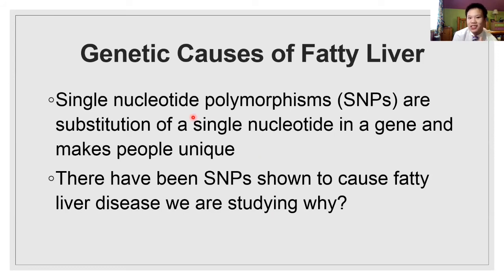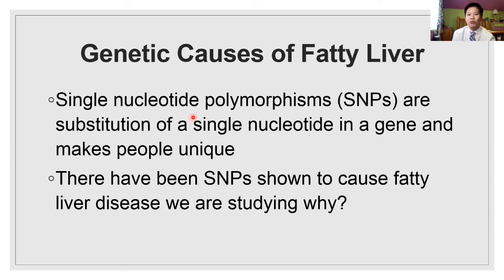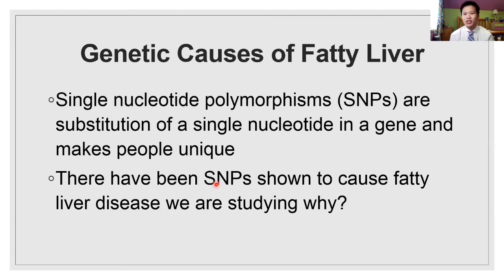Well, there are these things called single nucleotide polymorphisms, which is basically a change in one nucleotide. For example, maybe I have an A and you have a G, and those are what make me different from you. And what I've been trying to study is how some SNPs cause fatty liver disease in people and why, and we're trying to figure that out, and hopefully that will lead to more therapies for fatty liver disease.